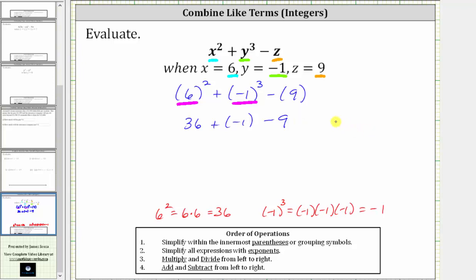And now we add and subtract from left to right. 36 plus negative one is equivalent to 36 minus one, which is 35, giving us 35 minus nine, and 35 minus nine is equal to 26.